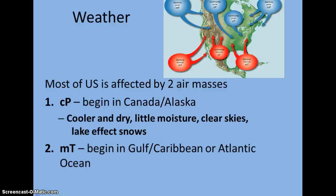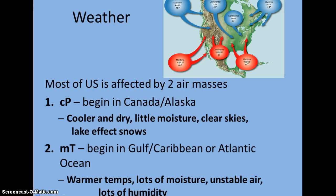That continental polar air mass forming in Canada and Alaska is going to bring cooler, dry air — not a whole lot of moisture associated with it; we get clear skies. If you have ever heard of lake effect snow in the Midwest, especially in western Michigan, that continental polar air mass moves across Lake Michigan to pick up some moisture and produce large amounts of snow in western Michigan. The maritime tropical forming in the Gulf and the Caribbean brings warmer temperatures, a lot of moisture, high humidities, unstable air, and more precipitation.